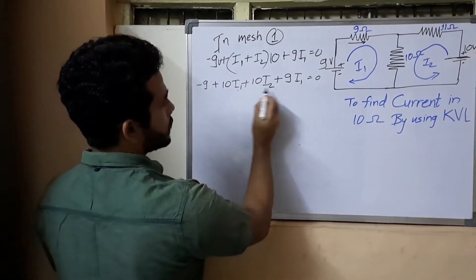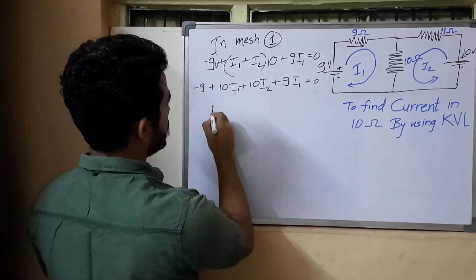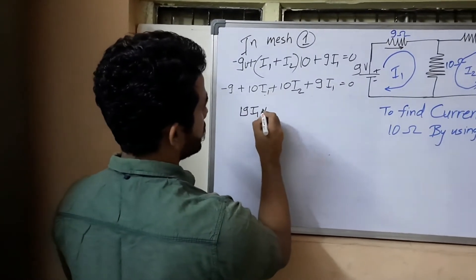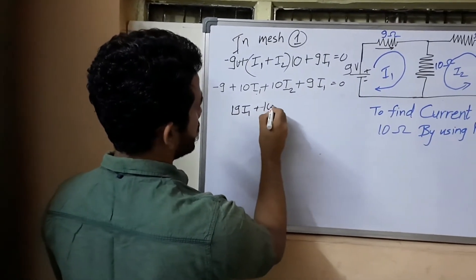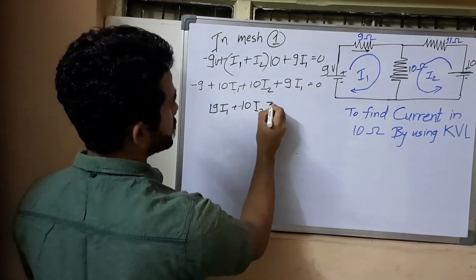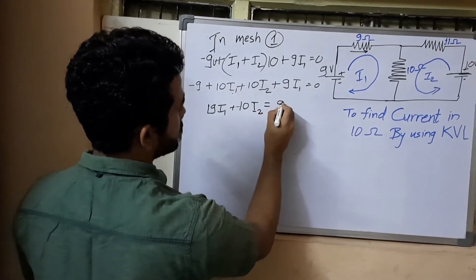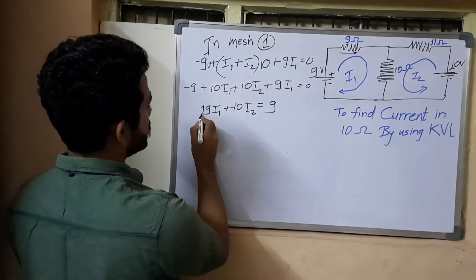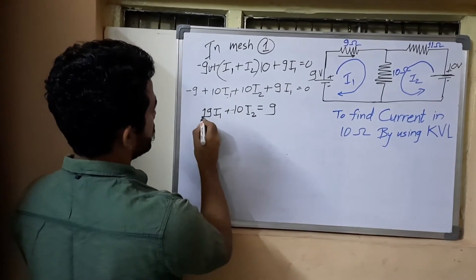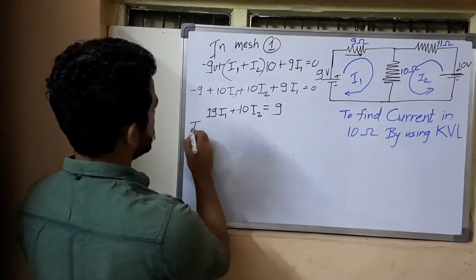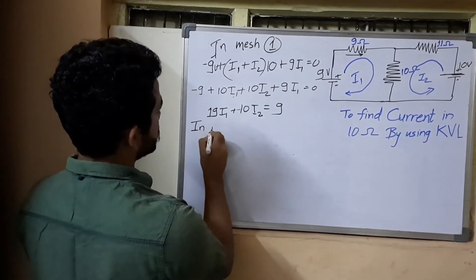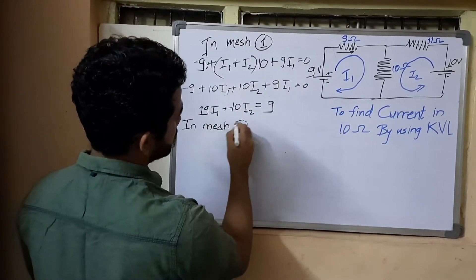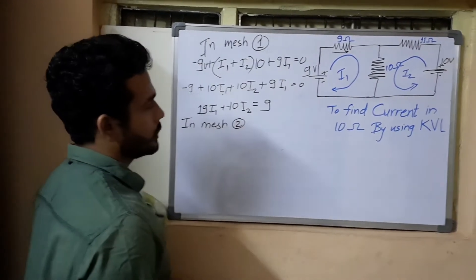Simplifying: 10·I1 plus 9·I1 gives 19·I1. So the first equation is: 19·I1 plus 10·I2 equals 9.